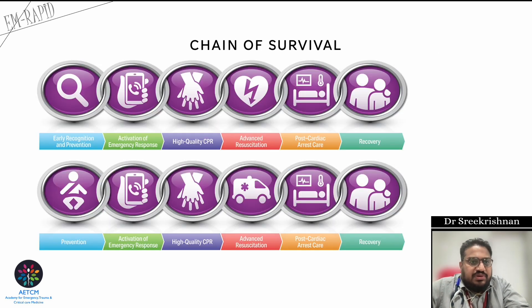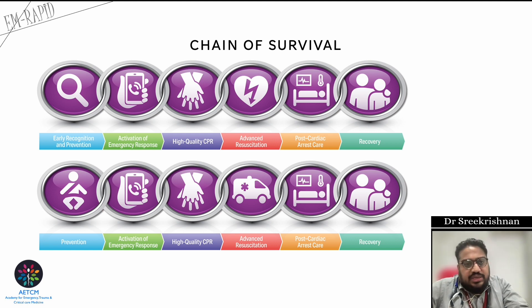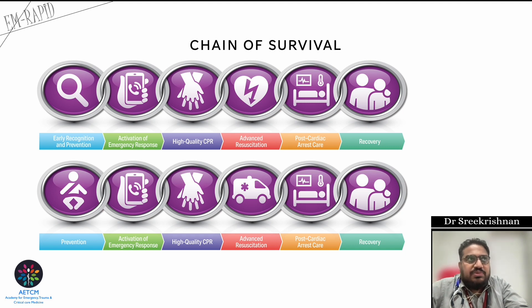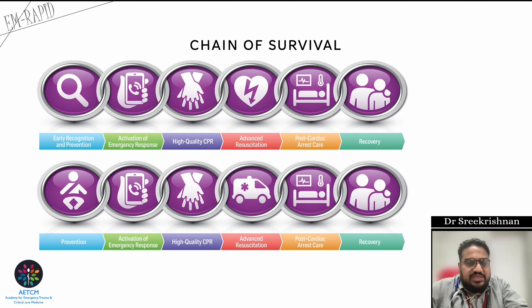Coming to the chain of survival, you are seeing the algorithm here. The topmost one is for in-hospital cardiac arrest and the lower one is for pre-hospital cardiac arrest. When you look at the in-hospital cardiac arrest, the first element is early recognition and prevention. Whenever a child is admitted to your hospital, you should have a system to identify a sick child as early as possible.